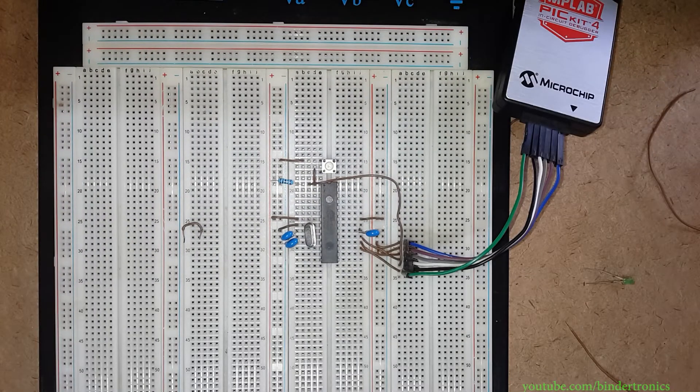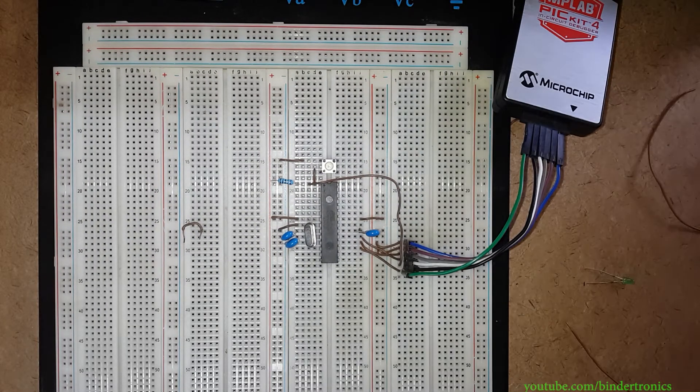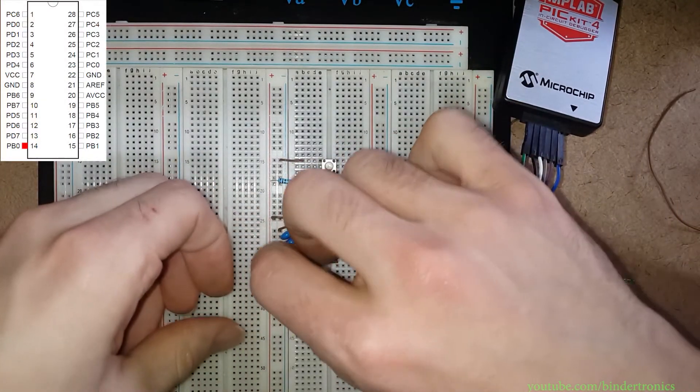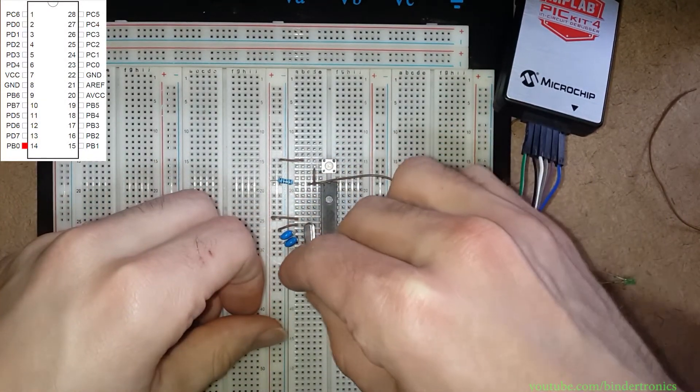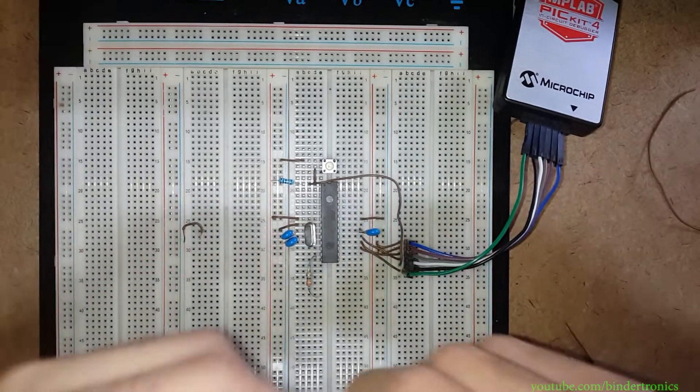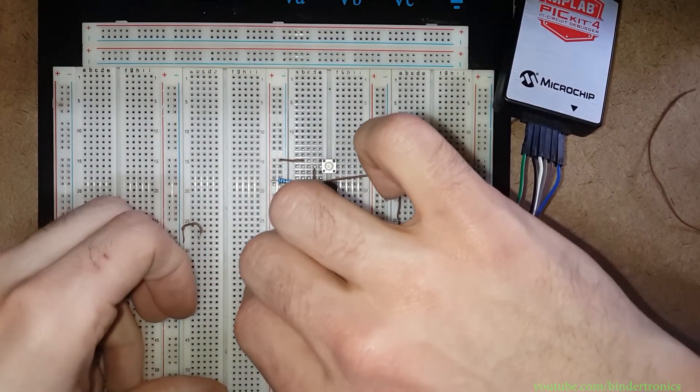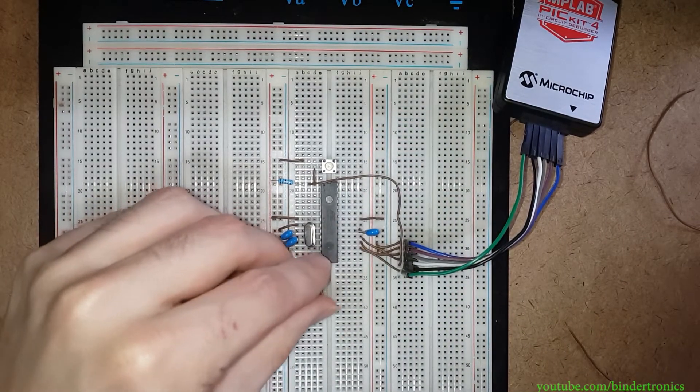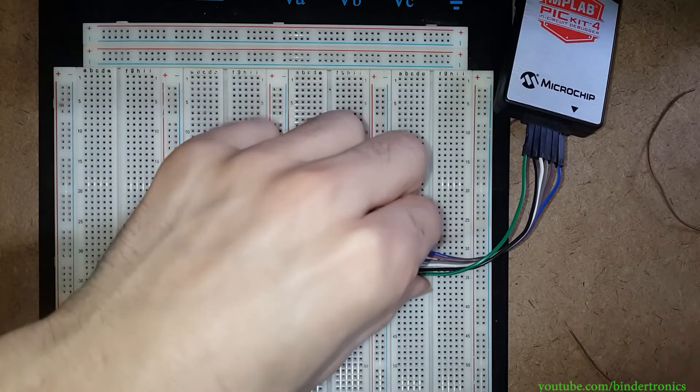And we are going to hook a 330 ohm resistor to pin number 14 just down here. And we're just going to attach a LED to that for when I start doing the blink test.